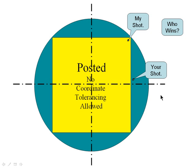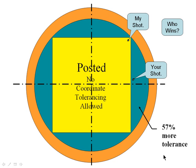Then explain that the position tolerance gives you a cylindrical zone, and there is a 57% increase in tolerance, and if they use the MMC modifier, you get even more tolerance.